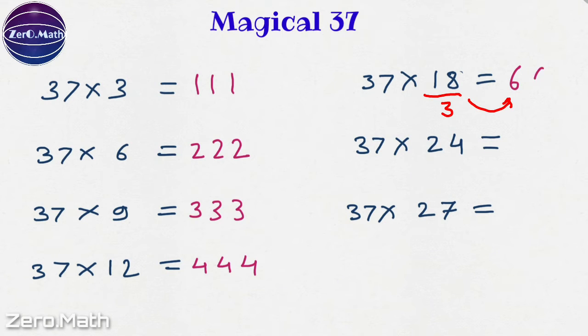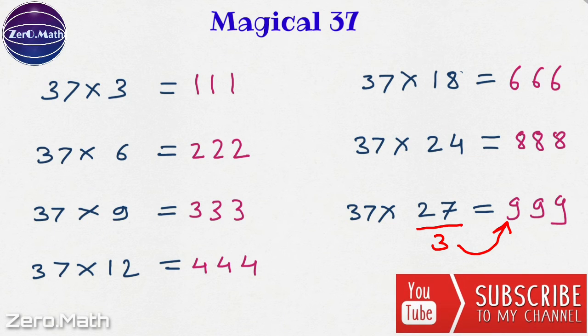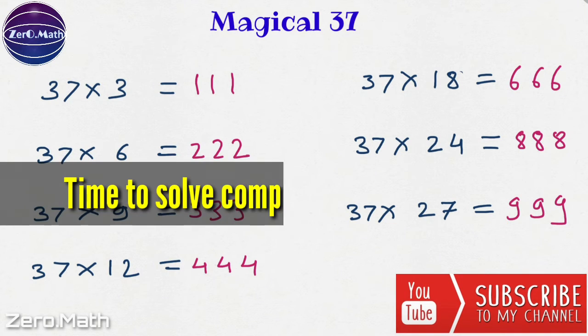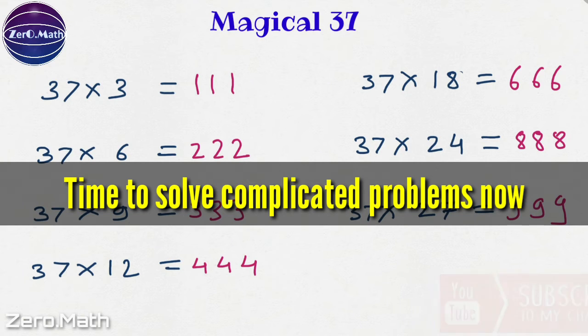37 times 18 would be 6, 6, 6. 37 times 24 would be 8, 8, 8 and 37 times 27 would be 9, 9, 9. Friends, it's time now to solve the complicated problems. I hope so far you are enjoying our video.